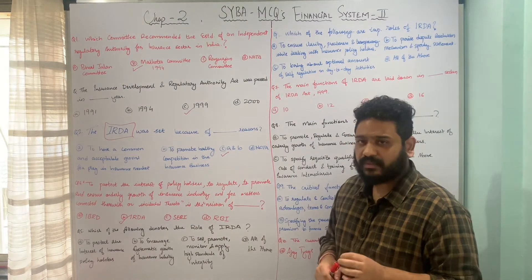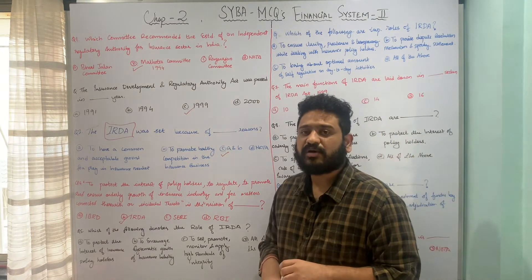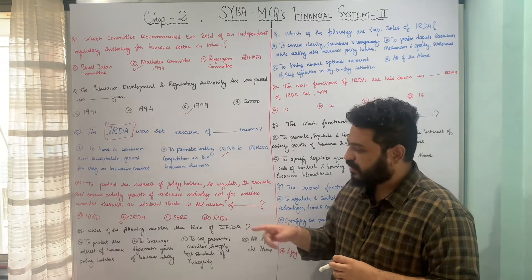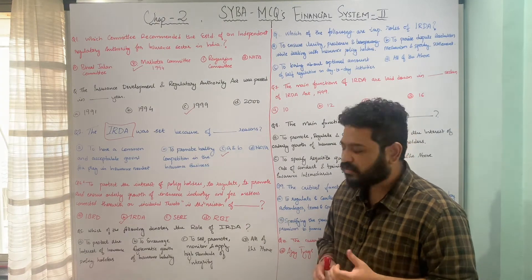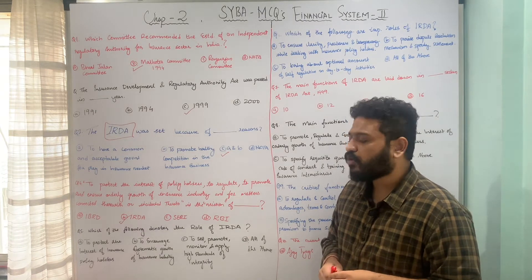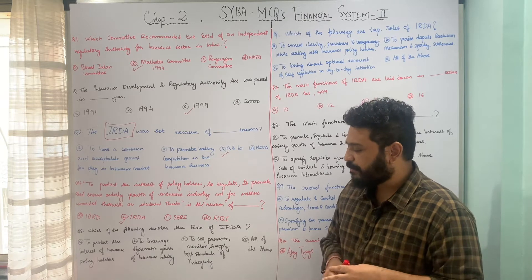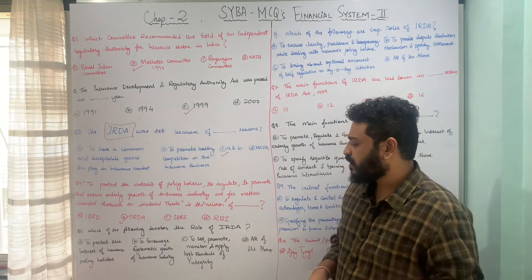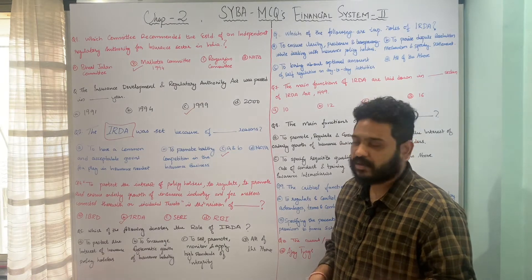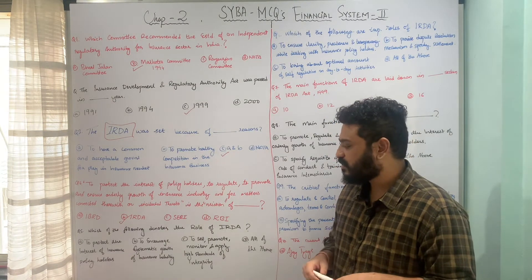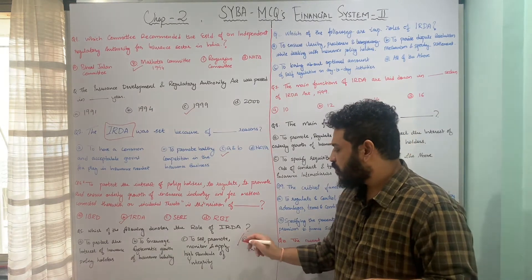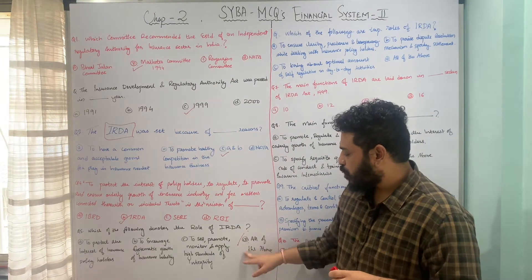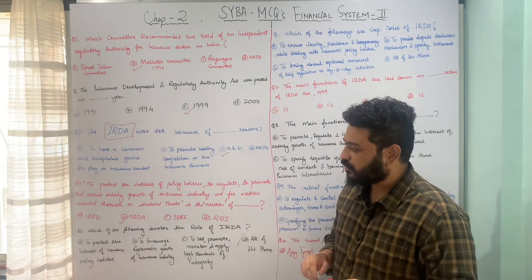The next question asks: which of the following denotes the role of IRDA? Option A - to protect the interest of insurance policyholders; Option B - to encourage systematic growth of the insurance industry; Option C - to set, promote, monitor and apply high standards of integrity; Option D - all of the above. The correct answer is Option D — all of the above are roles of IRDA.